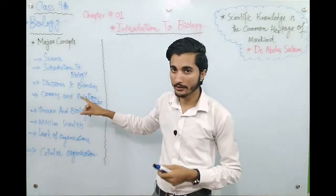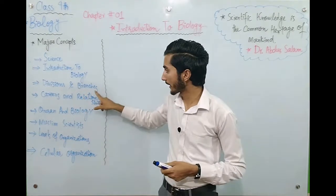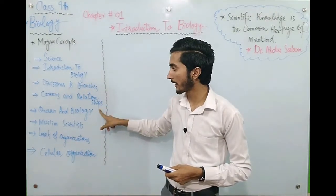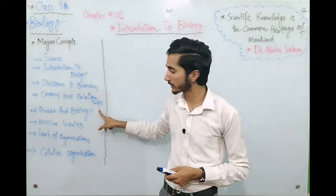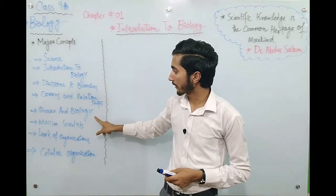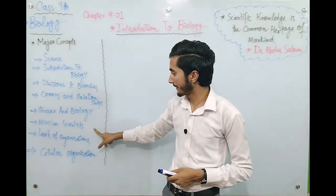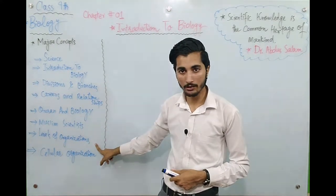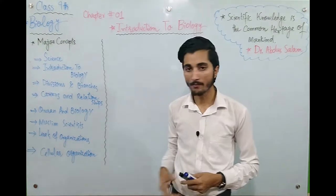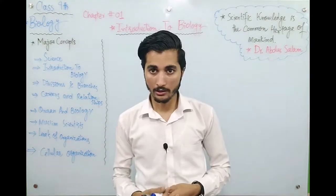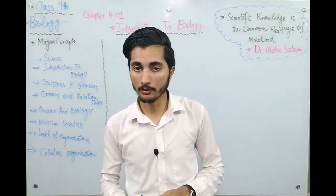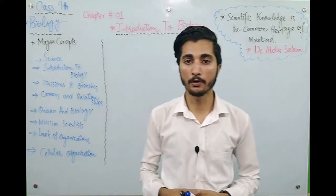Today we are going to talk about the introduction to biology. 3rd number, we are talking about intelligence and branches of biology. 4th number, we are talking about careers and relationships of biology. 5th number, we are talking about biology and Muslim scientists. 7th, levels of organization and cellular organization. These topics we will cover one by one and upload to our channel.